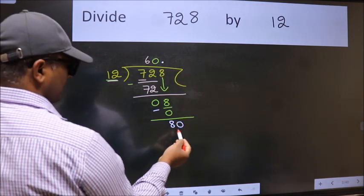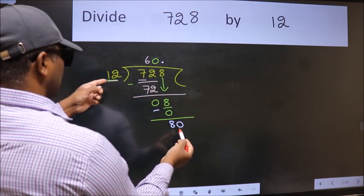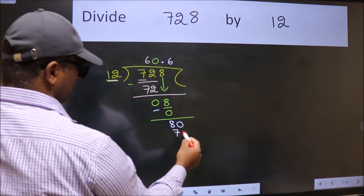So 80. A number close to 80 in 12 table is 12, 6, 72.